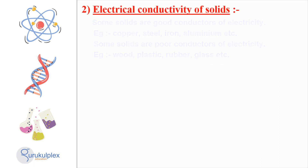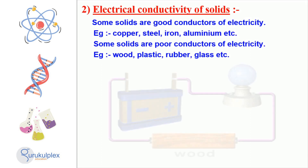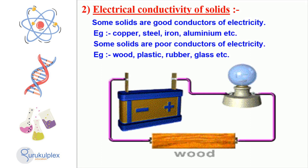Electricity has different effects on solids due to their electrical properties. Metals such as copper, steel, iron, and aluminium are good conductors of electricity, while wood, plastic, rubber, and glass are poor conductors.